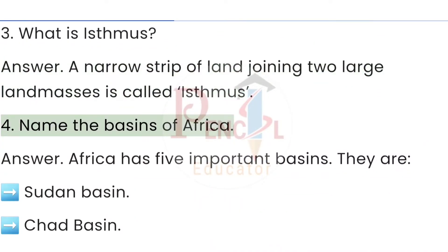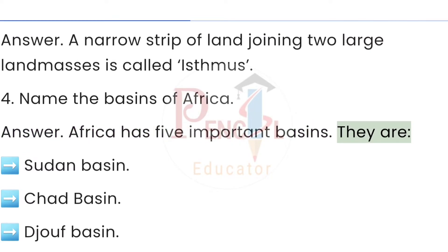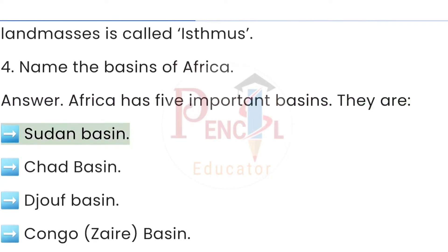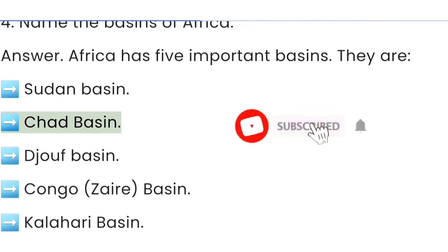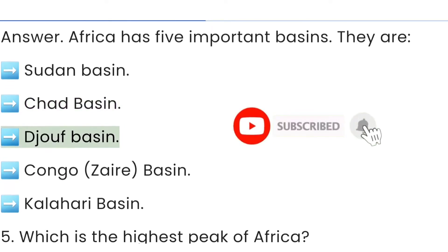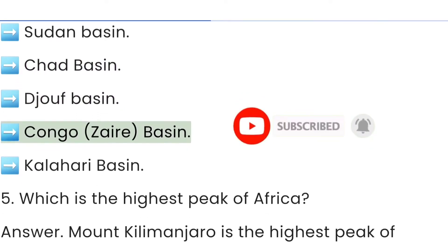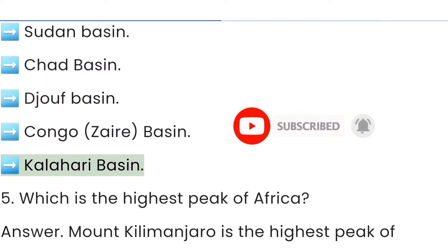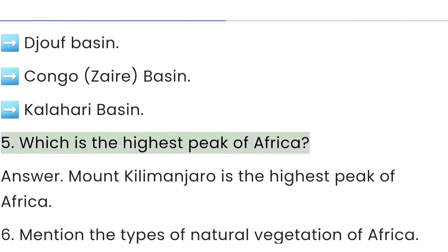Question 4: Name the basins of Africa. Answer: Africa has five important basins. They are the Sudan Basin, Chad Basin, Juke Basin, Congo Basin, and Kalahari Basin.